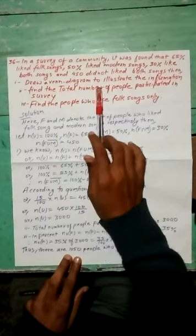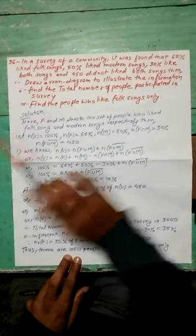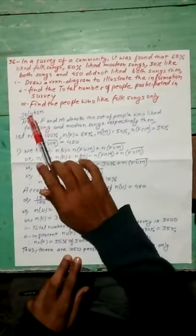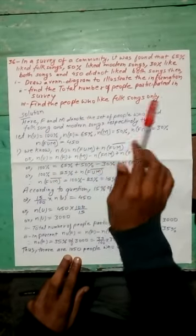Then, draw a Venn diagram to illustrate the information. Find the total number of people participated in the survey. Find the people who liked fox song only.